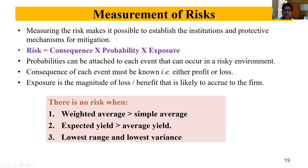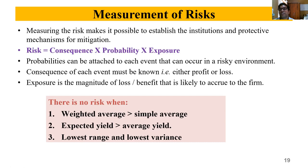There are three methods to measure risk. The first method is the weighted average method, where we find both the simple average and weighted average. If the weighted average happens to be more than the simple average, then there is no risk. Similarly, for expected yield versus average yield: if expected yield is more than average yield, there is no yield risk. The farmer should select that enterprise — whether crop enterprise like groundnut, cotton, maize, or livestock enterprise — that has the lowest range, lowest variance, and lowest coefficient of variation.